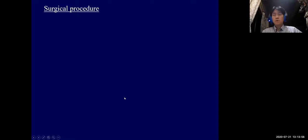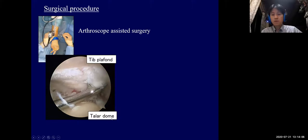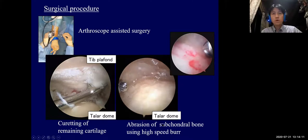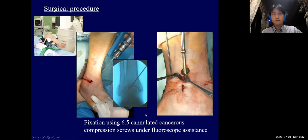The next topic is arthrodesis. We recently use the arthroscope-assisted technique. Curettage of the remaining cartilage and perforation of the subchondral bone using a high-speed burr are applied with arthroscopic support. Then 6.5 millimeter cannulated compression screws are inserted under fluoroscopic assistance.